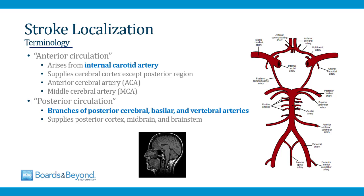There's some terminology around stroke localization that's important to understand. You can divide strokes into two categories: those that affect the anterior circulation and those that affect the posterior circulation. The anterior circulation refers to areas of the brain perfused by the internal carotid artery — basically all of the cerebral cortex except the posterior region, which includes the occipital lobe. The two internal carotids feed blood through the middle cerebral artery and the anterior cerebral artery.